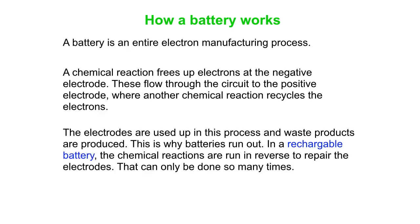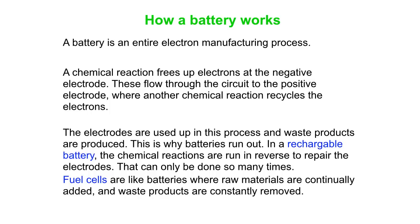Now, the electrodes, of course, are used up in this process. And waste products, like any other manufacturing process, are produced. And that's why batteries run out. Some batteries are rechargeable, which means you can run the chemical reactions in reverse to repair those electrodes. But you can only do that so many times. And some of you might have heard about fuel cells. They're a lot like batteries, but instead of the raw materials being packaged in a little box, the raw materials are constantly added and waste products are constantly removed.